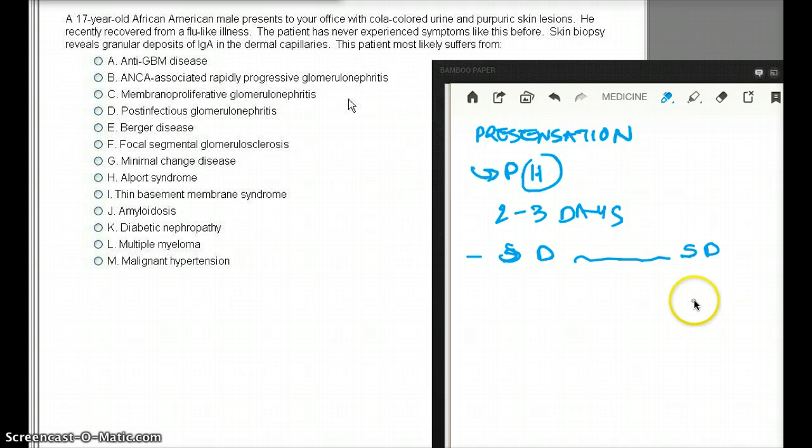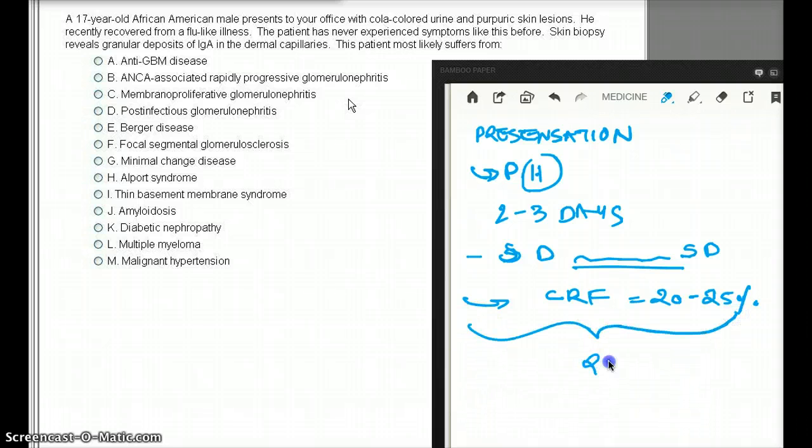Now the subsequent course is quite variable. How it's going to present later on, you can't really say. Many people have a normal renal function for decades. This time span could be decades, and then it could go back. In 20 to 25% of the cases, it shows progression to chronic renal failure. That's 20 to 25% of the cases. But that happens over a time period of 20 years.